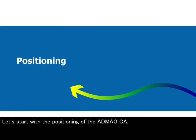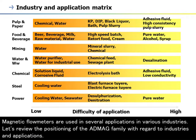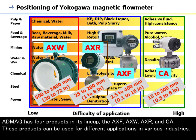Let's start with the positioning of the Abmec CA. Magnetic flow meters are used in several applications in various industries. Let's review the positioning of the Abmec family with regard to industries and applications. Abmec has four products in its lineup: the AXF, AXW, AXR, and CA. These products can be used for different applications in various industries.